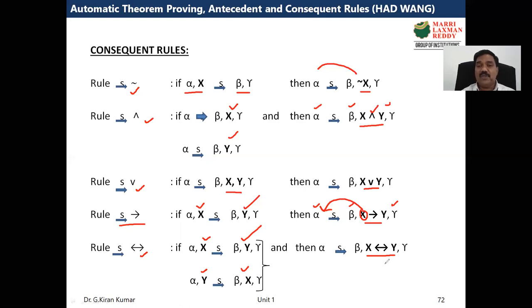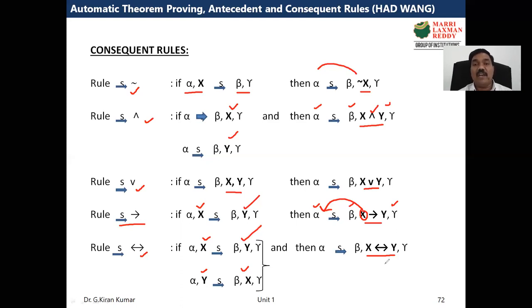I request everyone to please practice these formulas from right to left — write them once or twice in your notebook without looking. Only then watch the next video, where we will see examples applying automatic theorem proving to prove certain inferences. If you are thorough with all five antecedent and five consequent rules, you will fully enjoy the next examples. Thank you.